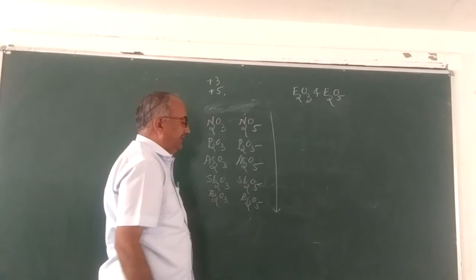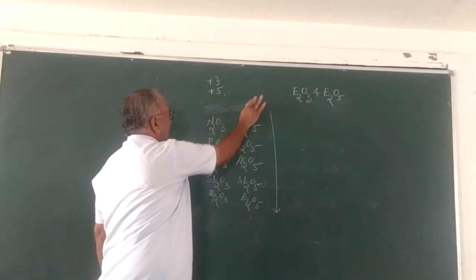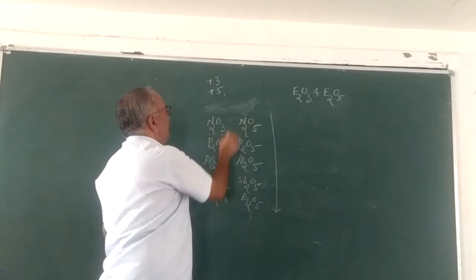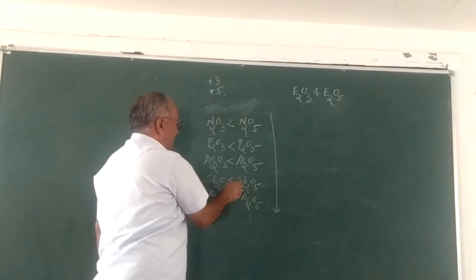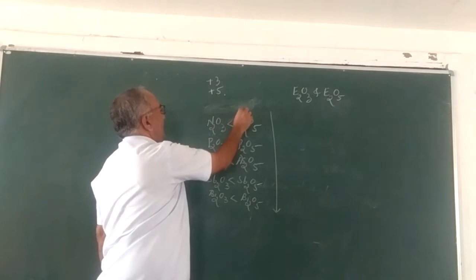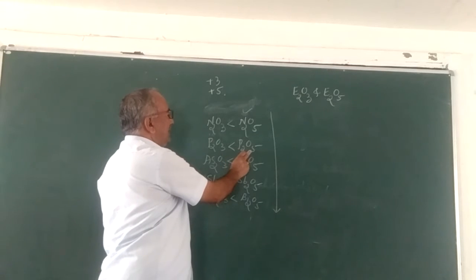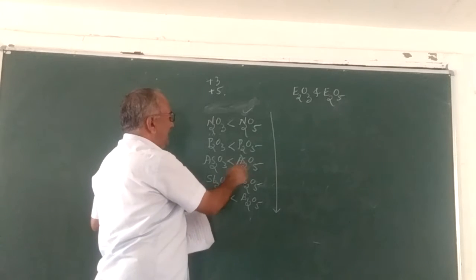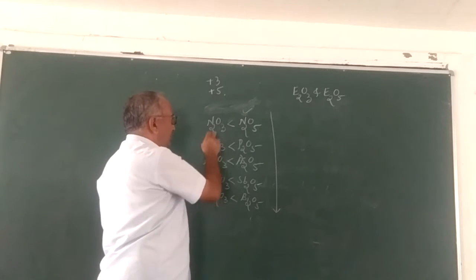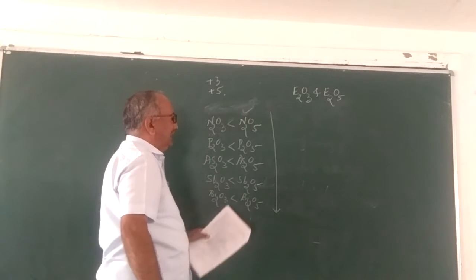As acidic character decreases down the group, basic character increases. The higher oxidation state oxide is more acidic than the lower oxidation state. So nitrogen pentoxide is more acidic than nitrogen trioxide. Similarly for other oxides. But the acidic character for both trioxides and pentoxides decreases from top to bottom.